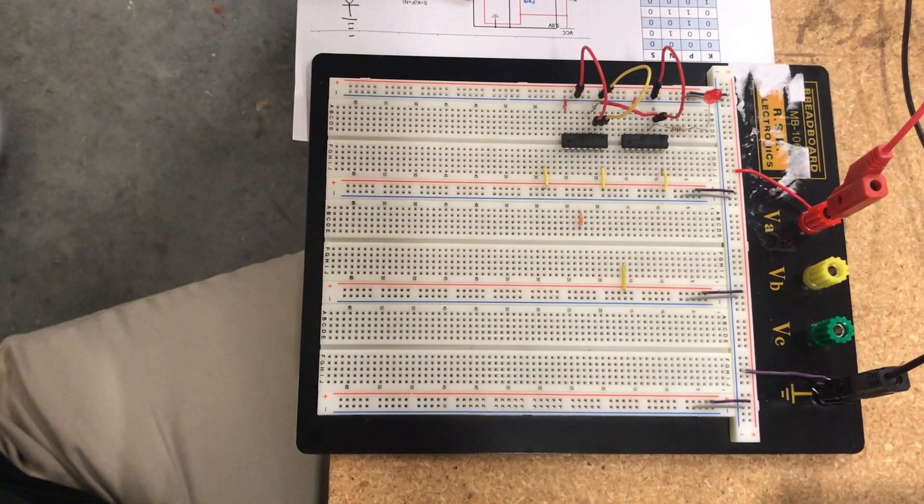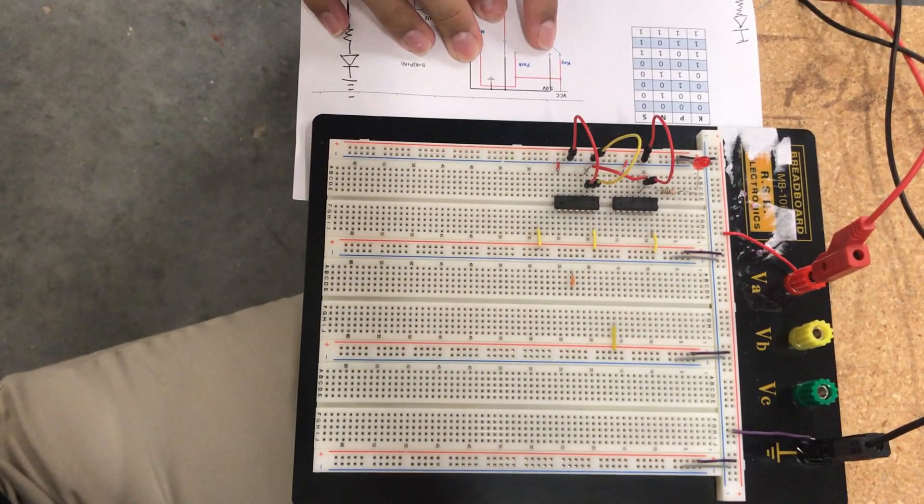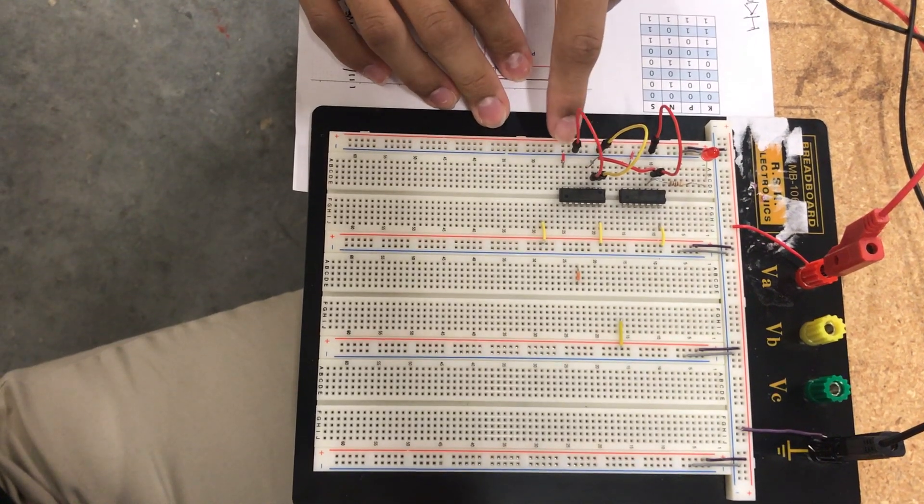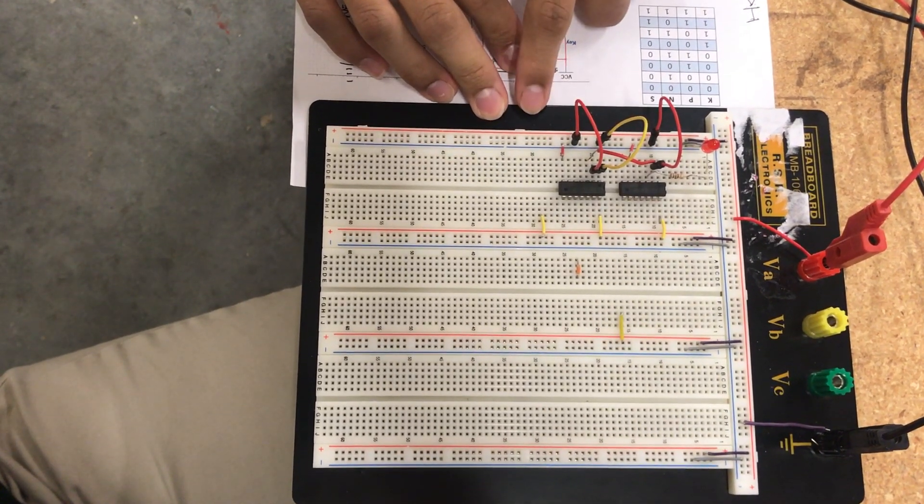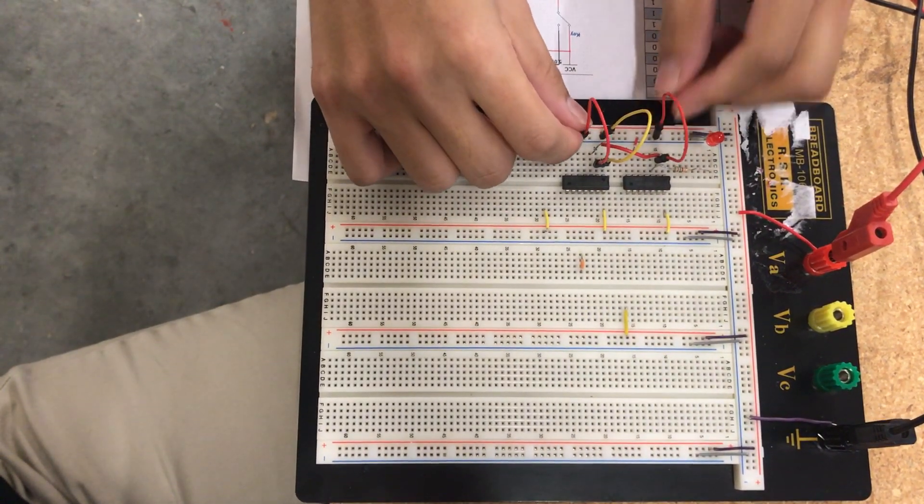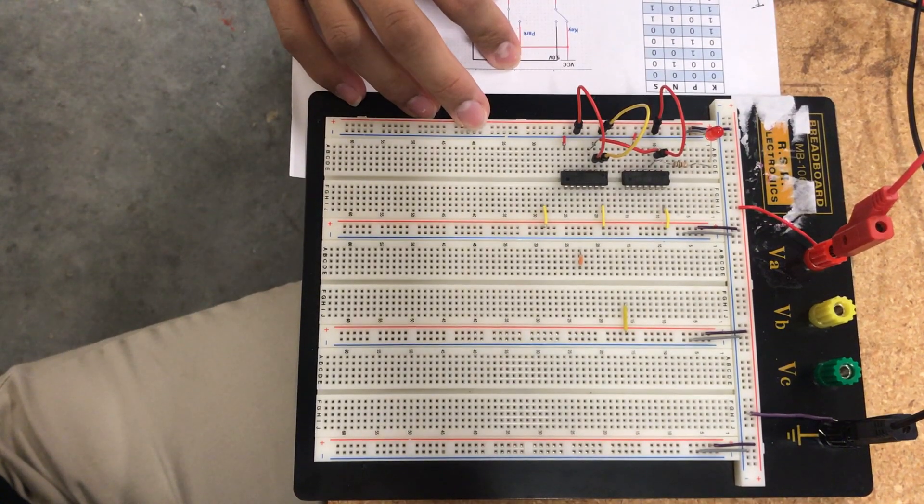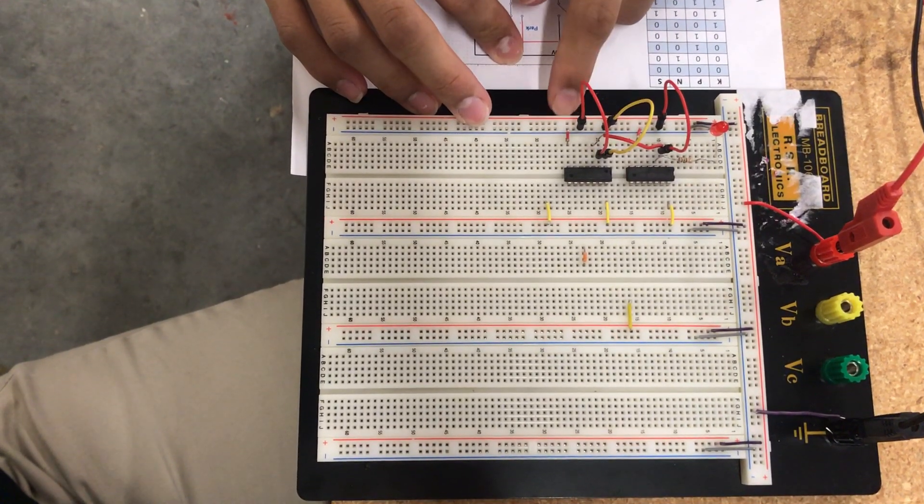Alright, so I'm doing a truth table right here of the zeros and ones. This is key part. I'll just read it out right now while I change it. We're gonna start off with zeros. Make sure everything is at zero right now.